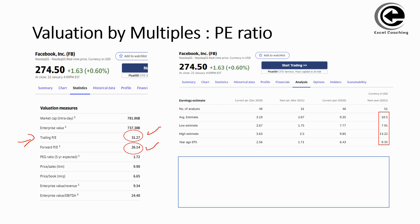We have two PE ratios here — one trailing and one forward-looking. PE ratio is effectively price divided by earnings per share. We're going to prove that for Facebook using the data which is readily available. On the left-hand side you have the PE ratio, and on the right-hand side you have the earnings per share. You will see a number of different metrics for earnings per share, because these are estimates of earnings in the future provided by different analysts.